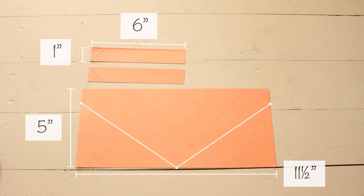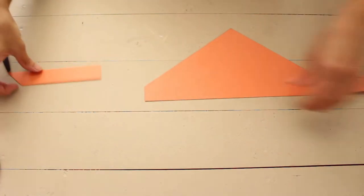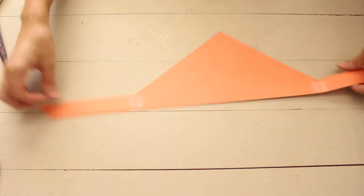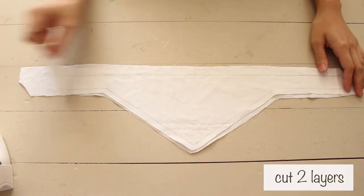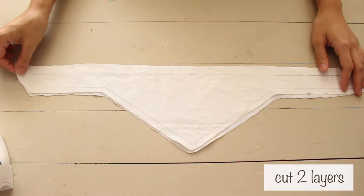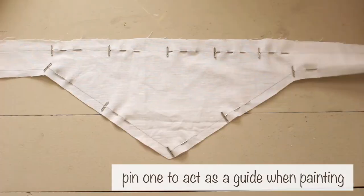I cut 2 6 x 1 inch strips, measured 1 inch and cut 45 degree angles at the ends. I taped them on opposite sides of the triangle, traced it onto fabric and cut 2 layers. Next, pin 1 of the pieces to act as a guide when painting.